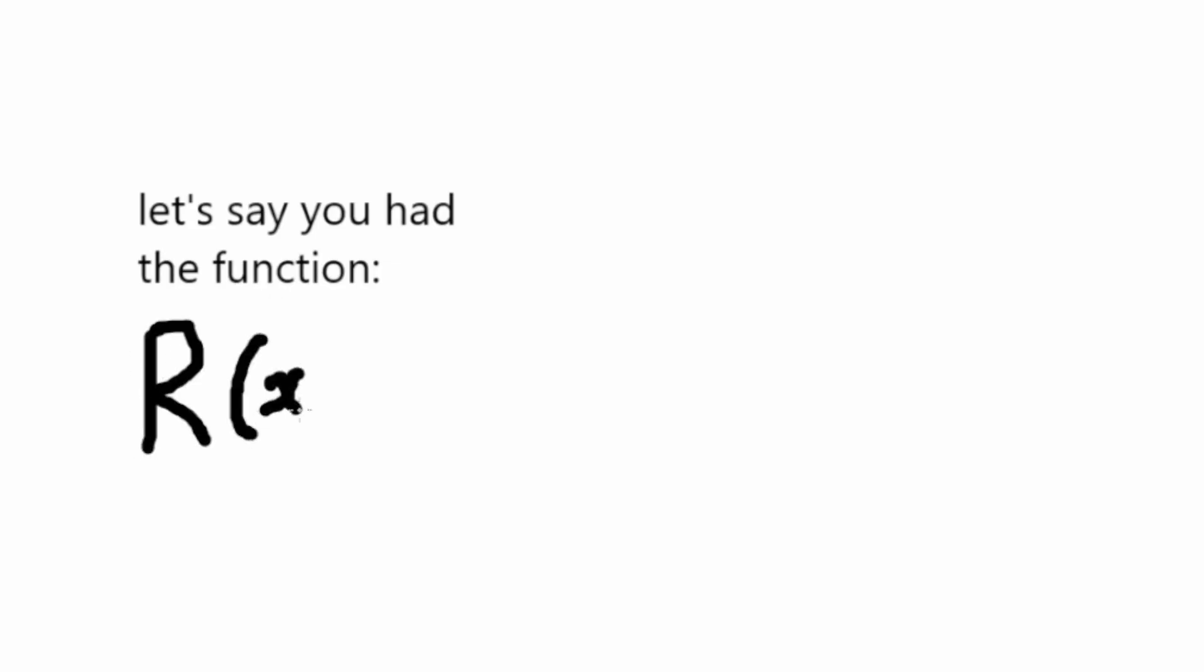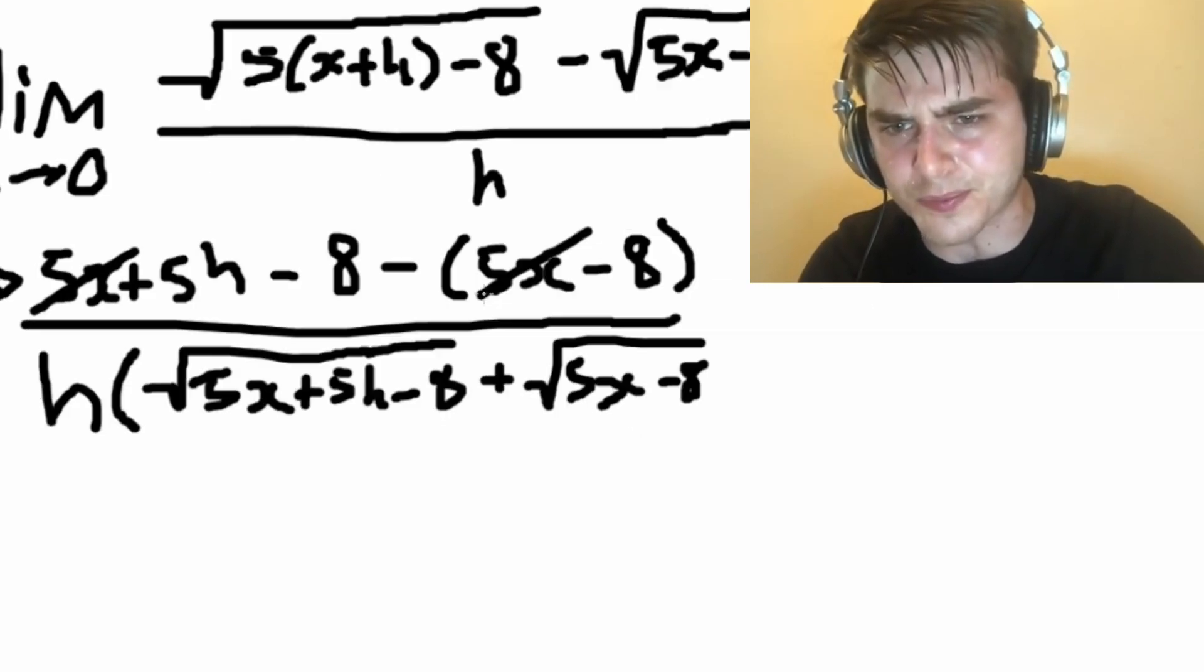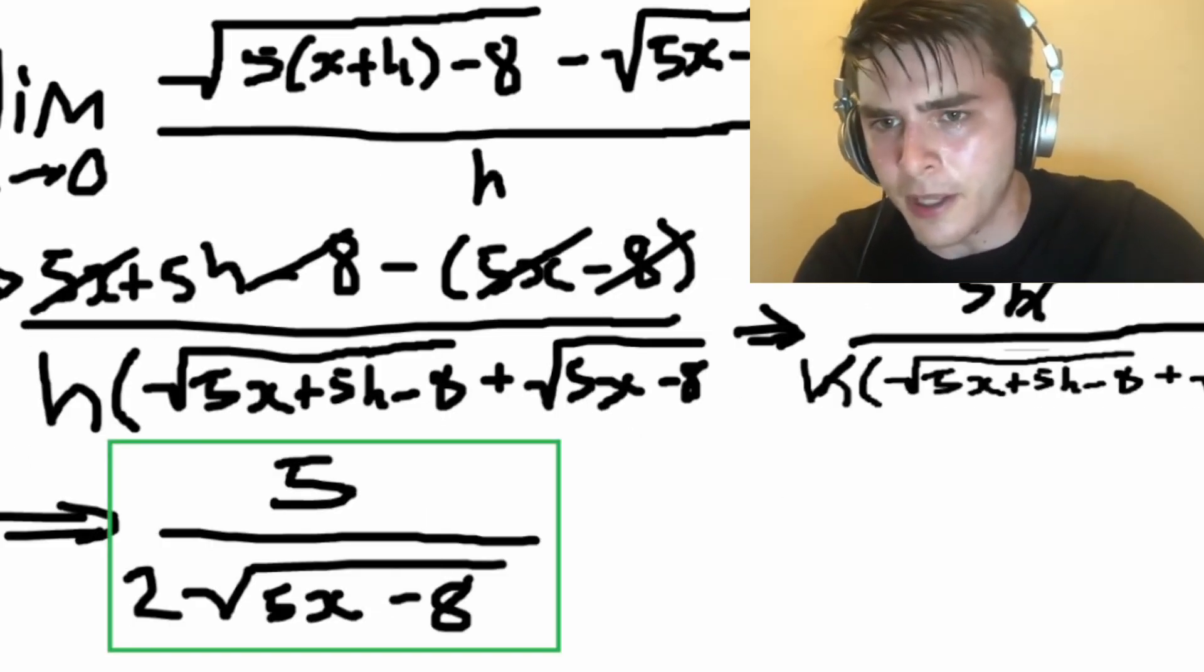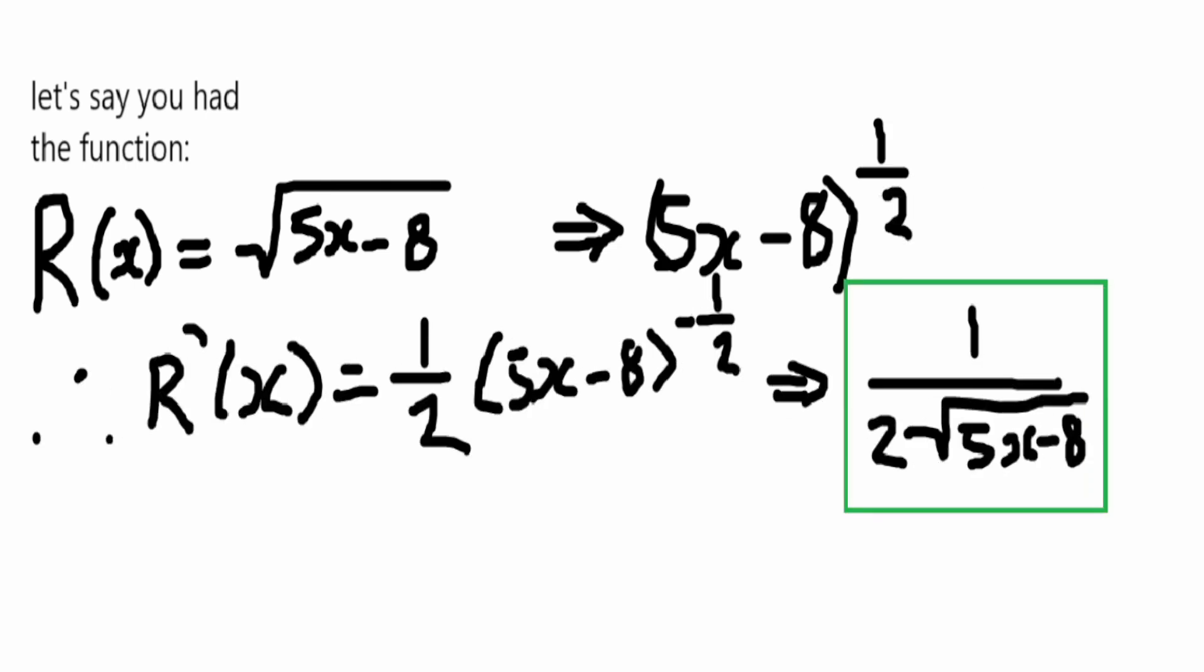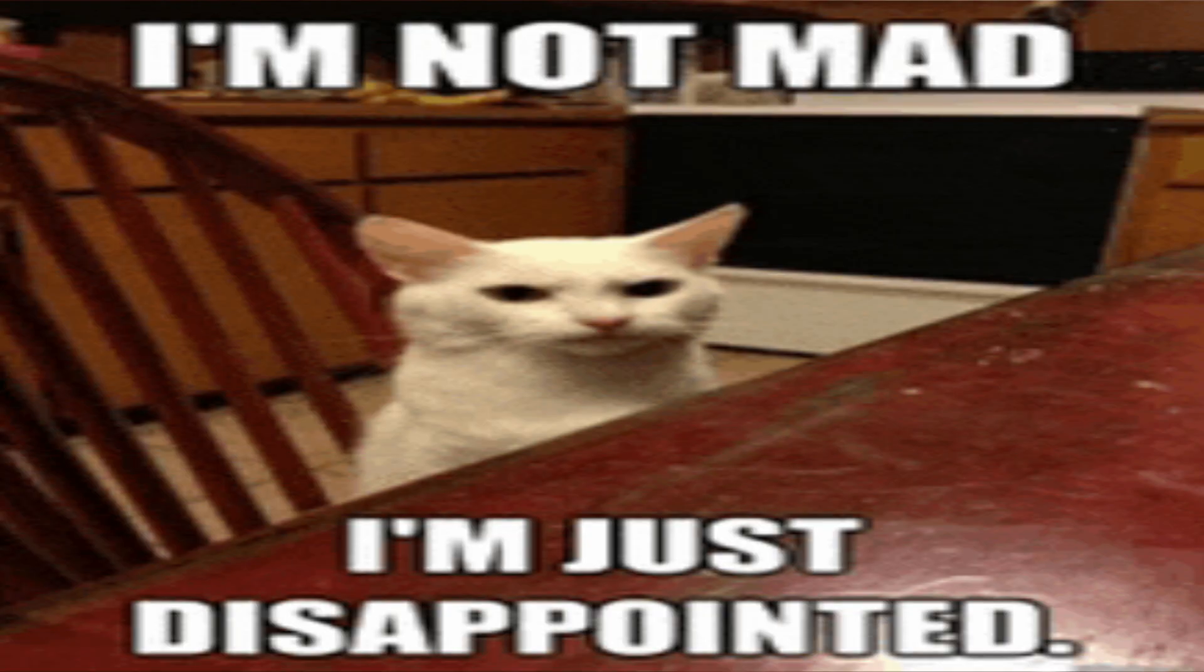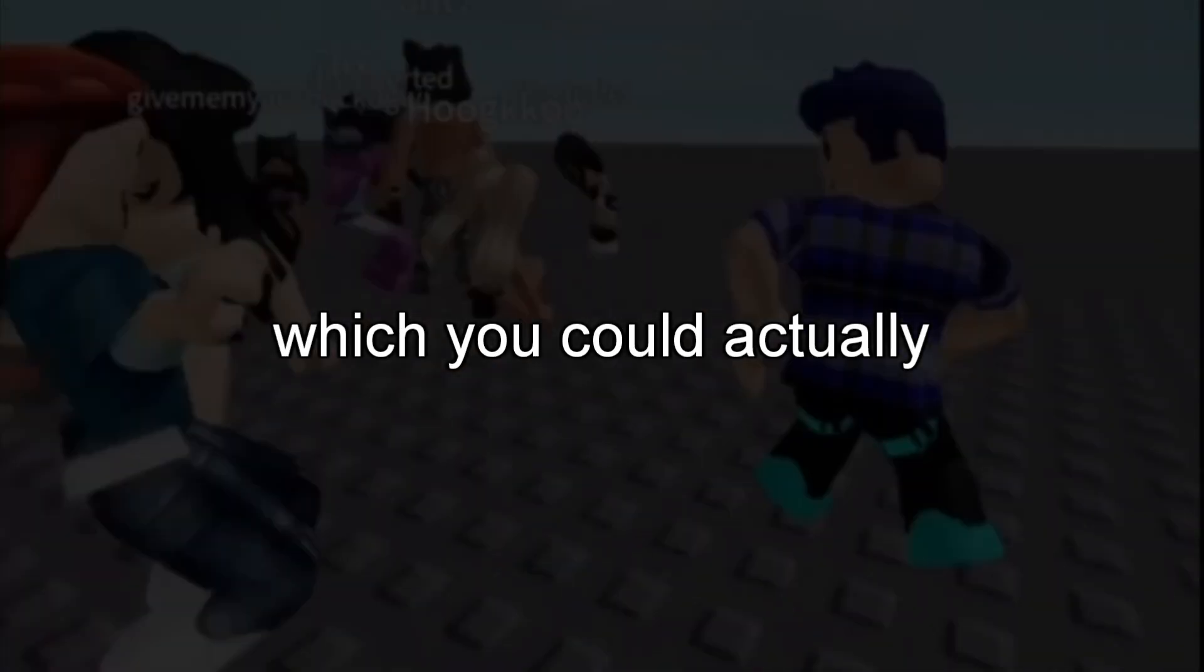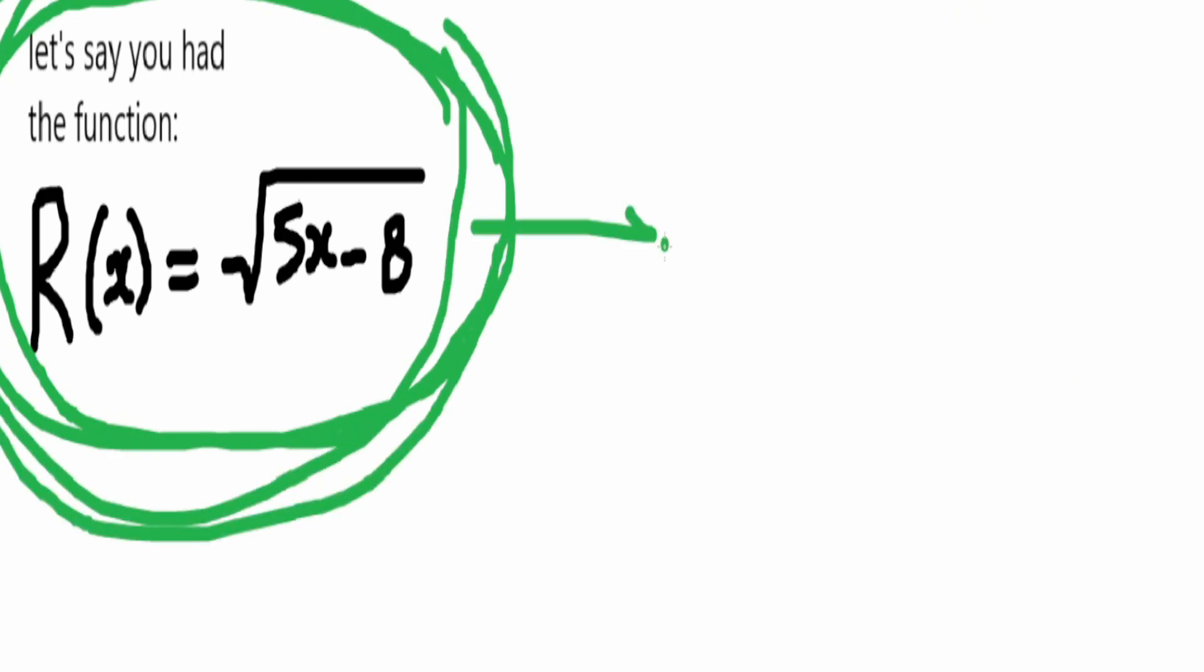Let's say that we had the function r of x equals the square root of 5x minus 8. If we were to use the first principles method, we'd find the derivative is 5 over 2 times the square root of 5x minus 8. However, if we use the power rule, we'd have 5x minus 8 to the power of 1 half, so we'd subtract 1 and multiply it by 1 half to get 1 divided by 2 times the square root of 5x minus 8, which is pretty close to the actual answer, but not good enough. I'm not mad. Nah, I'm just disappointed. So to get the correct answer and not waste your precious time by doing first principles, which you could actually spend playing Roblox, we can use the chain rule.